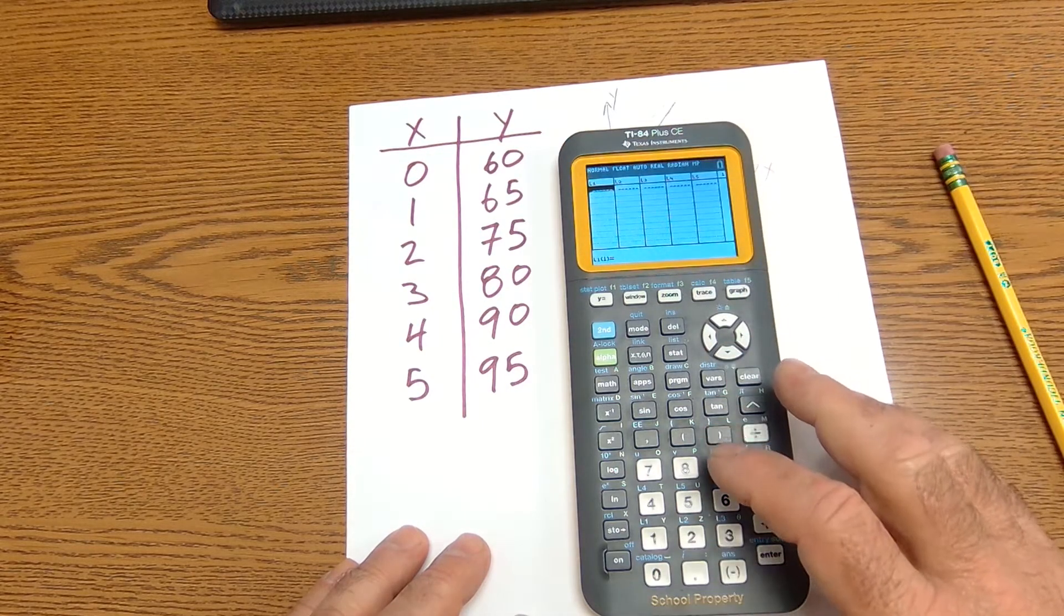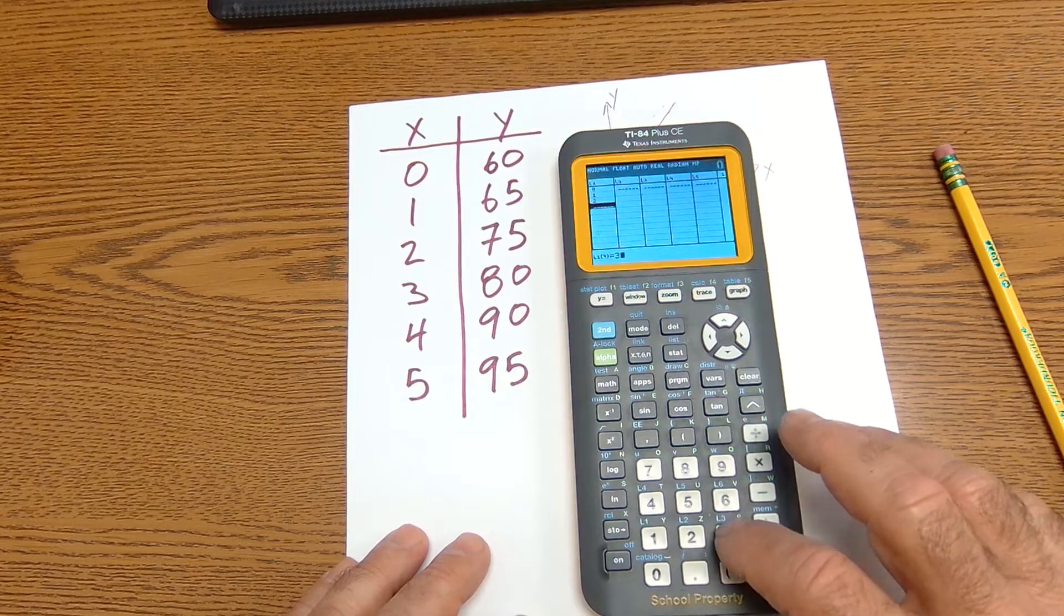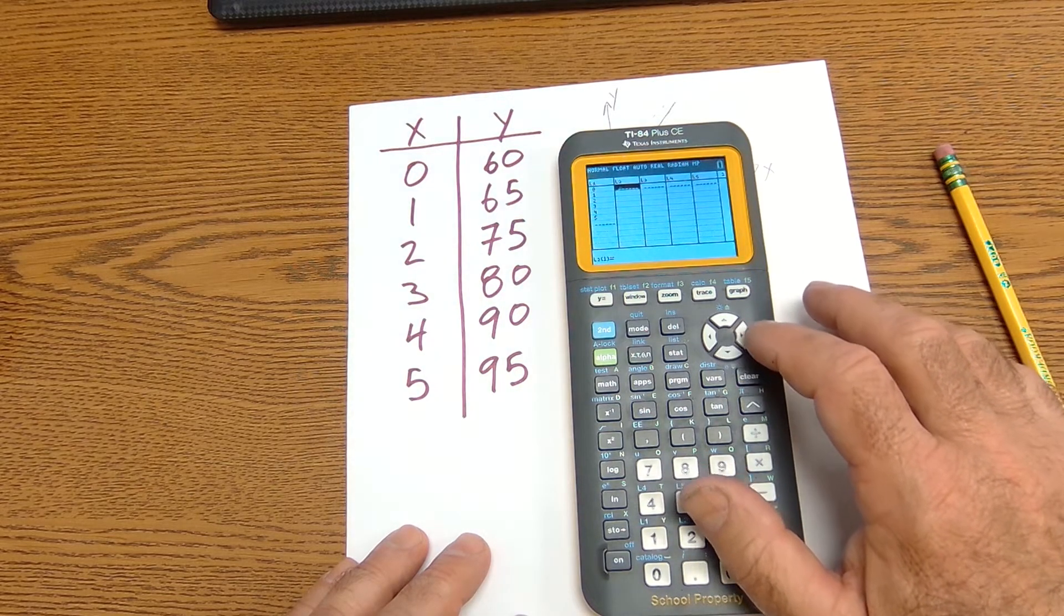So there's list one. My values are 0, 1, 2, 3, 4, 5.